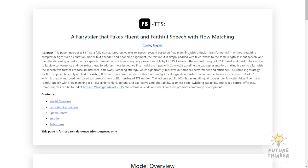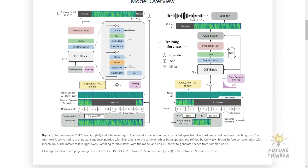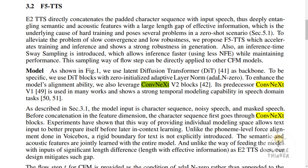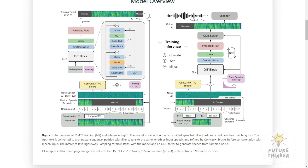One of the coolest things about F5 TTS is how it simplifies the whole TTS process. It ditches complex components like duration models, text encoders, and phoneme alignment. Instead, it uses a brilliantly simple approach — it just pads the text input with filler tokens to match the length of the speech. Genius, right? To refine the text representation and align it better with speech, F5 TTS employs ConvNeXt, which helps the model understand text better and produce more natural-sounding speech.